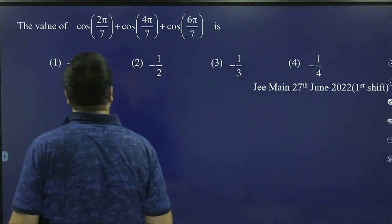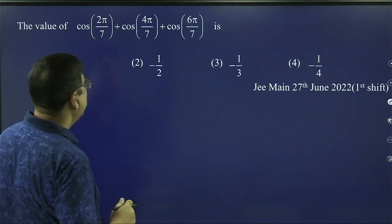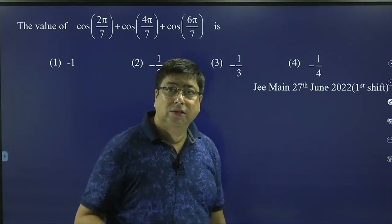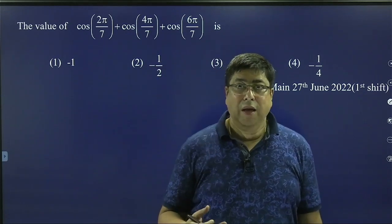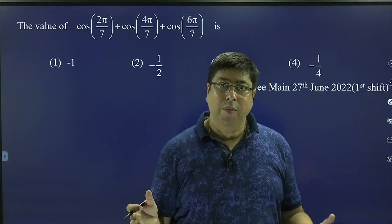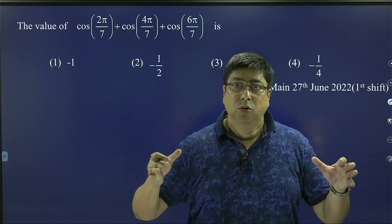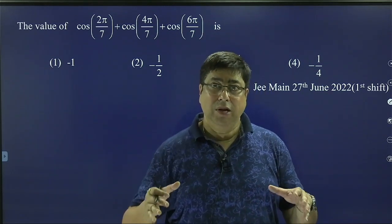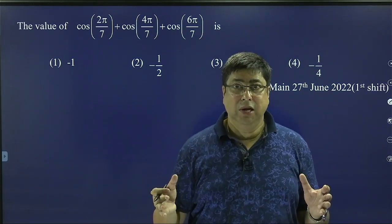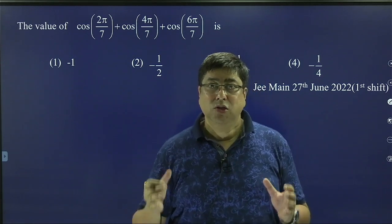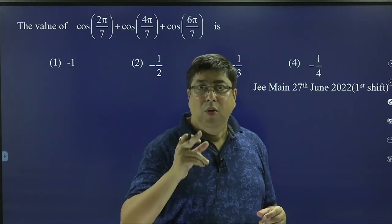So let us see this sum. The value of cos(2π/7) + cos(4π/7) + cos(6π/7). So everyone, just remember one thing. In this sum, we can solve it normally, but it will take some time. But to solve the sum in the shortest possible method in JEE type of examination, we have to use a series.